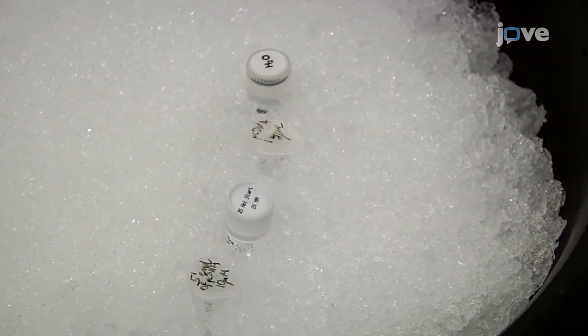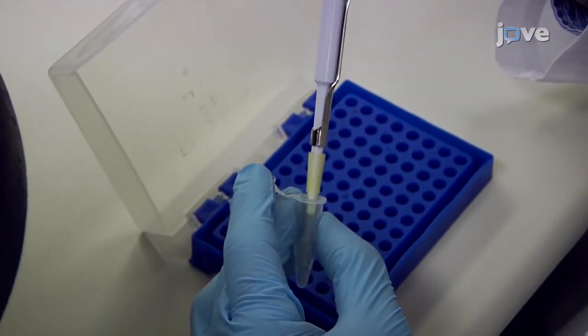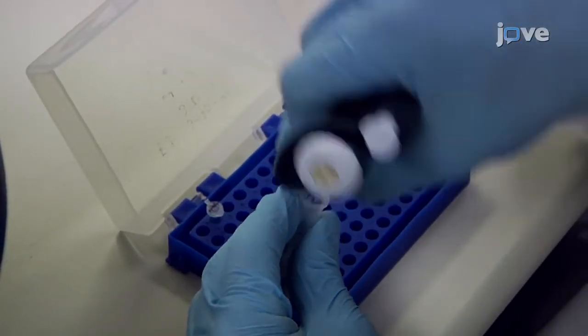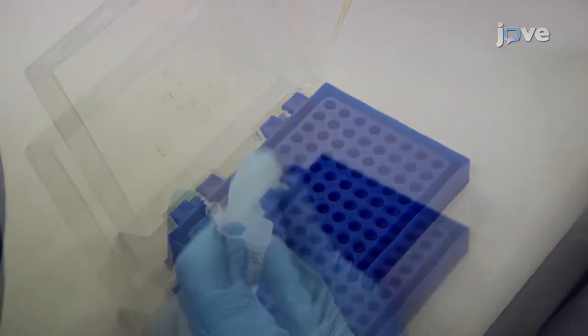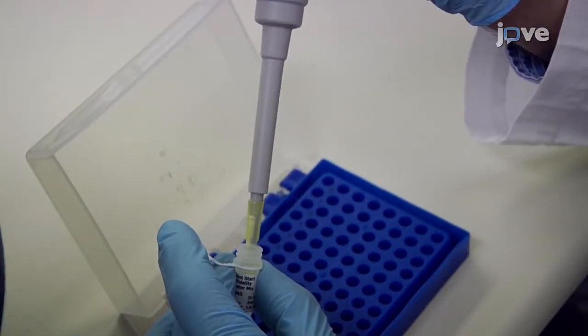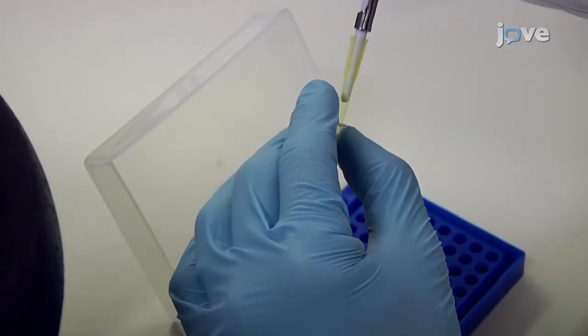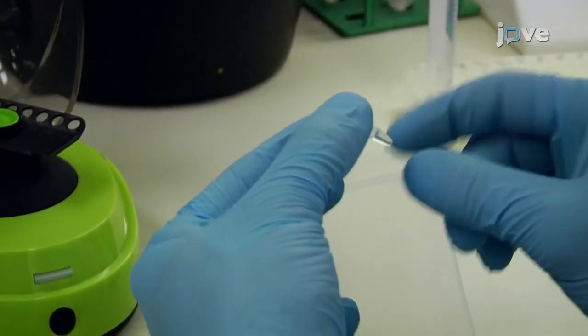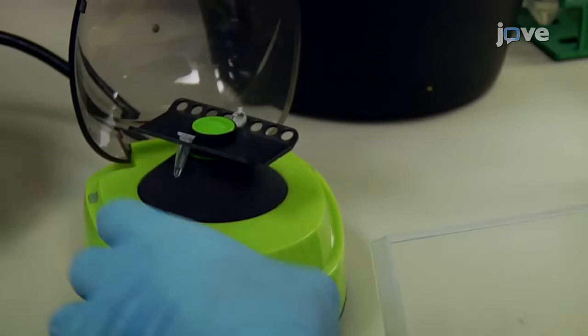Assemble the PCR reactions at room temperature by combining 2.5 microliters of 10 micromolar of each primer, 1 microliter of the 1 nanogram per microliter template DNA fragment, 25 microliters of hot start proofreading DNA polymerase, and 19 microliters of water. Mix the tube by gentle flicking and collect the liquid droplets by brief centrifugation.